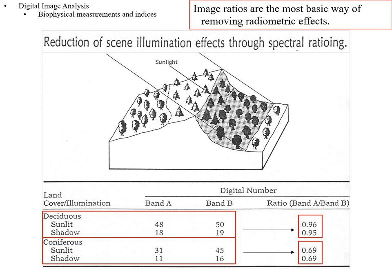Looking at sunlit coniferous versus sunlit deciduous, those values are more alike than either sunlit versus shadow comparison. However, when we take the ratio, we find much greater values for band A relative to band B for deciduous than for coniferous needleleaf systems. Band B is near-infrared versus red, and we know near-infrared is going to be higher for deciduous broadleaf stands. This gives us a way to discriminate the two reliably without having to do a full slope correction using a DEM to figure out illumination.